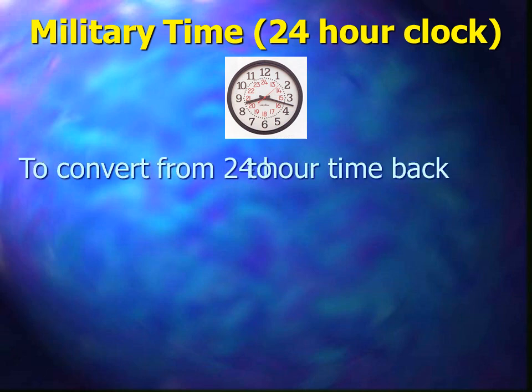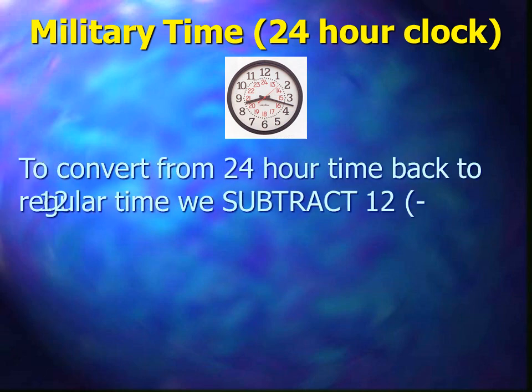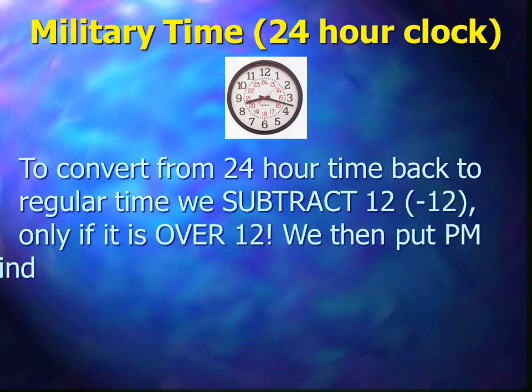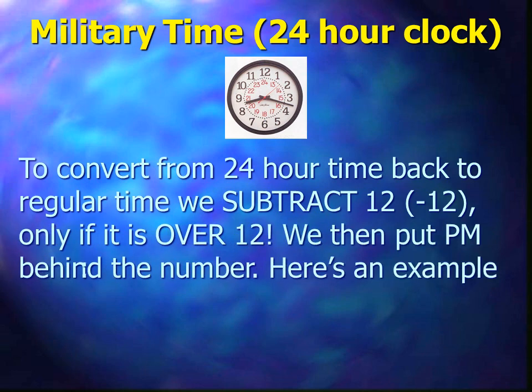To convert from 24-hour time back to regular time, we subtract 12 only if it is over 12, which makes sense. We then put p.m. behind the number.